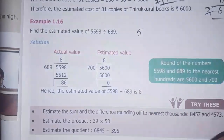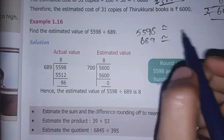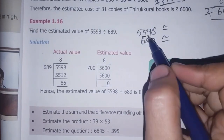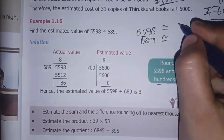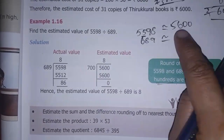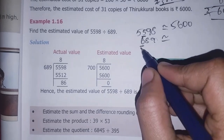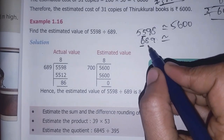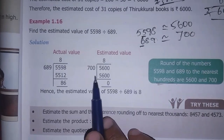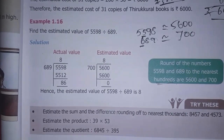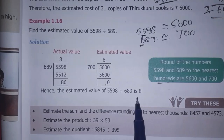Now we estimate to the nearest 100. For 5,598: the tens digit is 9, which is greater than or equal to 5, so we round up to 5,600. For 689: the tens digit is 8, which is greater than or equal to 5, so we round up to 700. Now we divide: 5,600 divided by 700 equals 8. So the estimated answer is 8.